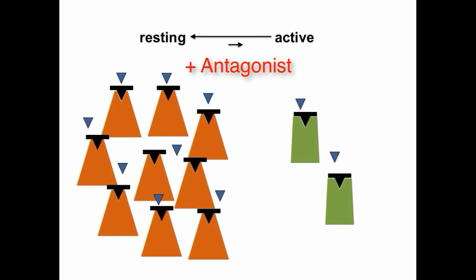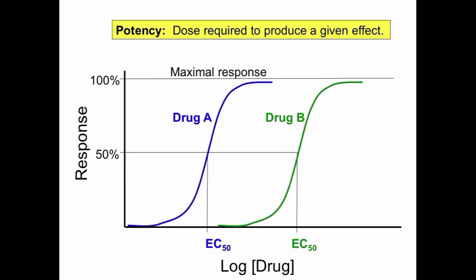If we want to quantitate these responses, we look at the dose-response curve, with log drug on the x-axis and response on the y-axis. Drug A has the same maximum response as drug B, except the EC50 — the concentration of drug required to get that response — is much less for drug A. So we would say that drug A is more potent than drug B.